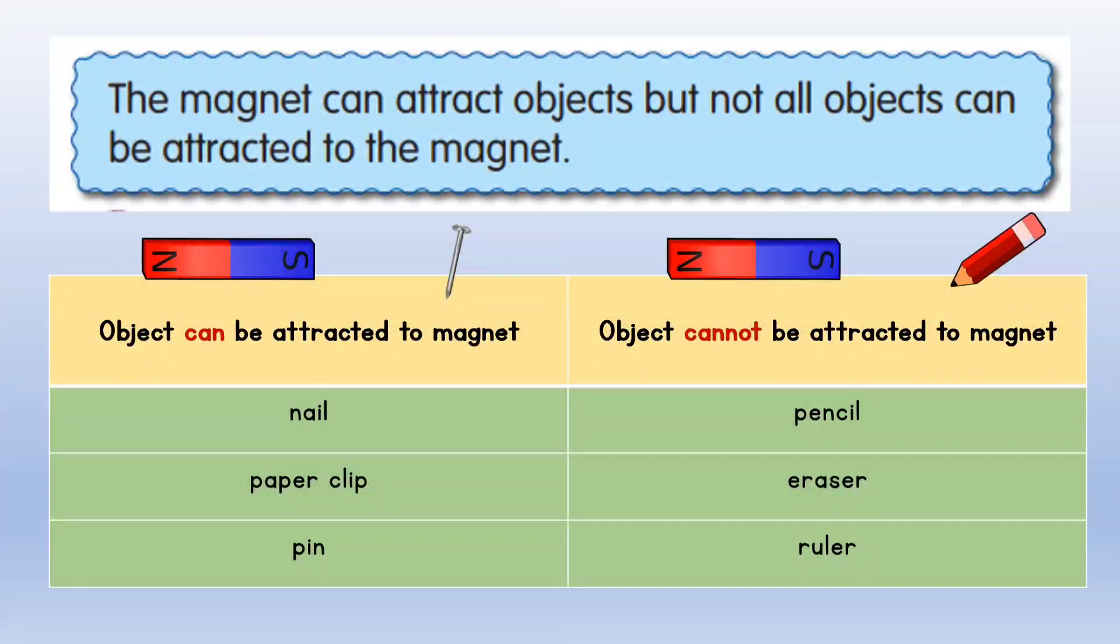So, now we can conclude that magnets can attract objects but not all objects can be attracted to the magnet. The table here shows example objects that can be attracted to the magnet and also objects that cannot be attracted to the magnet.